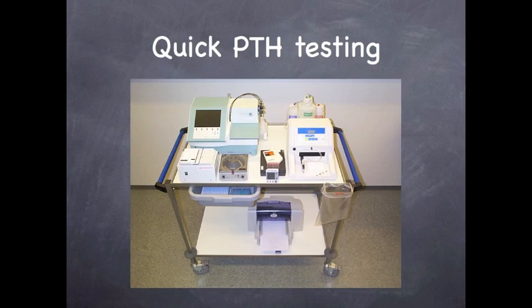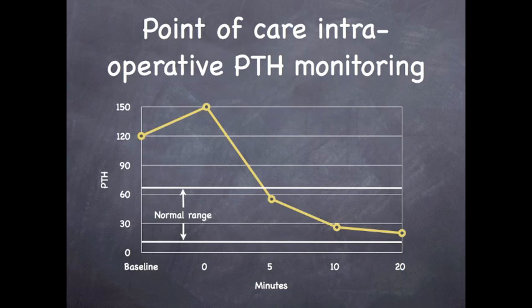During your parathyroid operation, PTH levels will be monitored on our state-of-the-art intraoperative PTH testing equipment. Parathyroid hormone levels are monitored at different time points during the operation. Following removal of an abnormal parathyroid gland, the PTH levels typically normalize within 10 minutes. If the PTH levels fail to normalize, the operation is continued to identify and remove additional overactive parathyroid glands. At the end of your parathyroid operation, a normal PTH level confirms that you are cured.